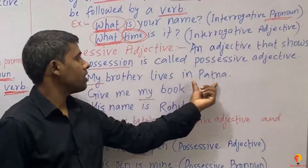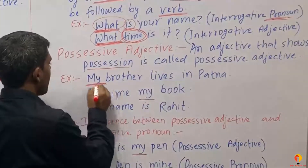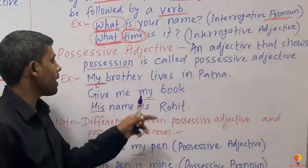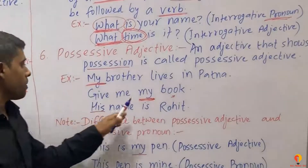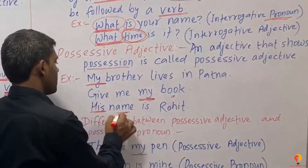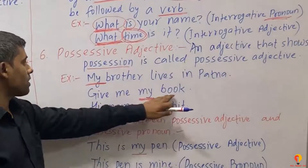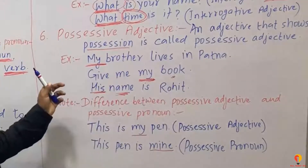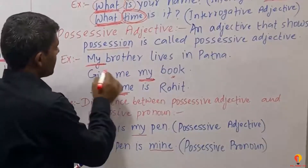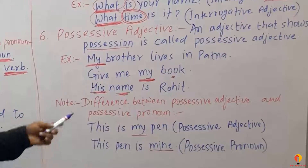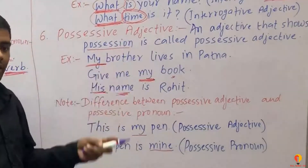For example: 'My brother lives in Tathana.' 'My wife is in Tathana.' Here, 'my' is a Possessive Adjective. 'His name' — 'his' is also used to show possession. So 'my' and 'his' are all called Possessive Adjectives.